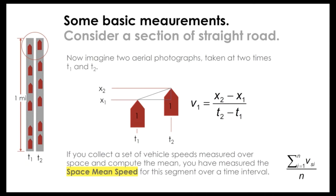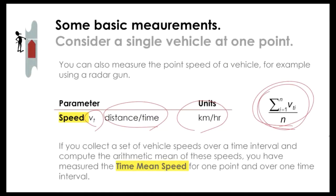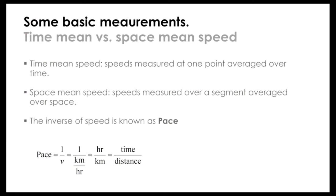If we collect a set of vehicle speeds measured over space and compute the mean, we get the space mean speed for that segment. Going back: if we use a radar gun to measure instantaneous speeds and take the arithmetic mean, we get time mean speed. But if we take the harmonic mean of those individual spot speeds, we get the space mean speed.